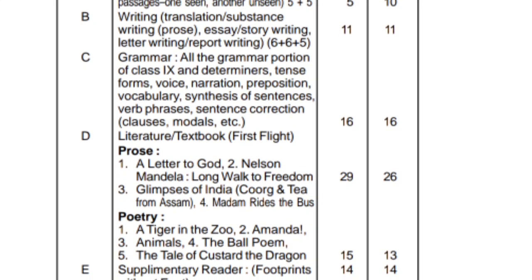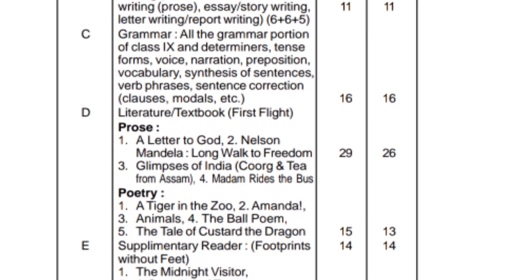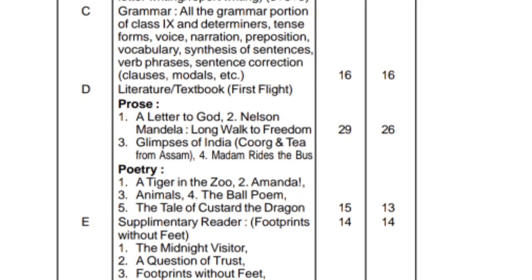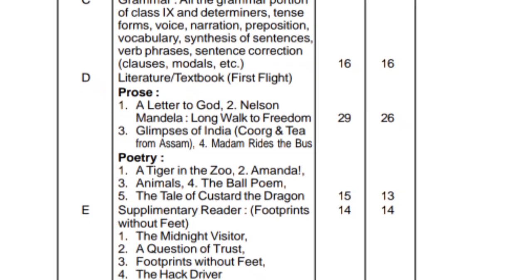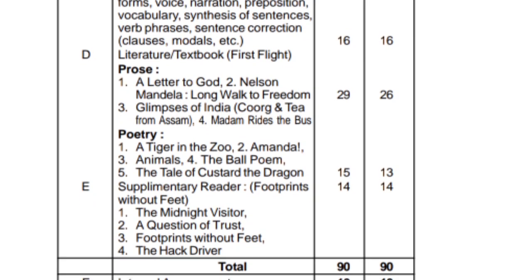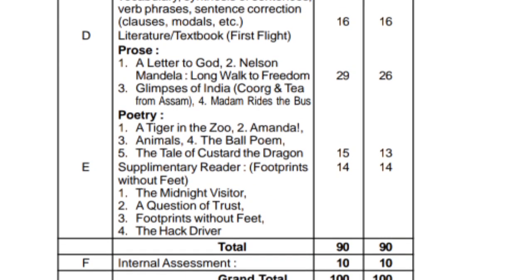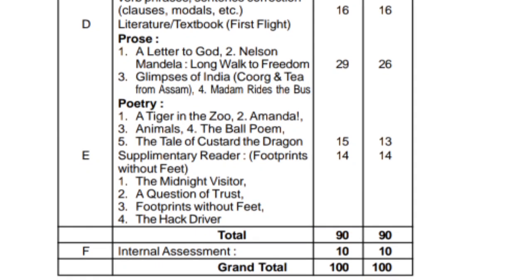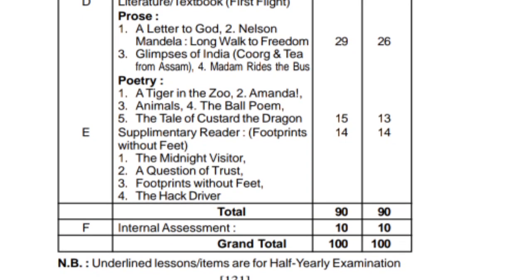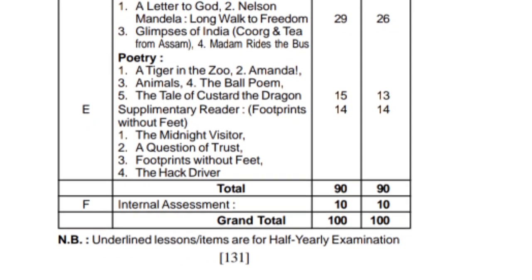This is the prose section. The prose section includes lessons by God, Lanson, Mandela, Long Walk to Freedom, Glimpses of India, Group Tiff Formation, and Madam Rice the verse — Tagore's essay. That is 29 marks for half field and 26 marks for the annual. For the poetry section: Tiger and the Zoo, Amanda, Animals, Wall Poem, and Tale of the Custard Dragon — 15 marks for half field and 13 for the annual. Then the supplementary reader section.